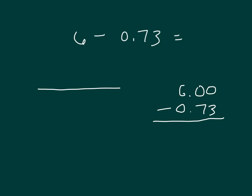In our place value chart, it looks like this. Ones, tenths, hundredths. We start with 6 or 6 ones.